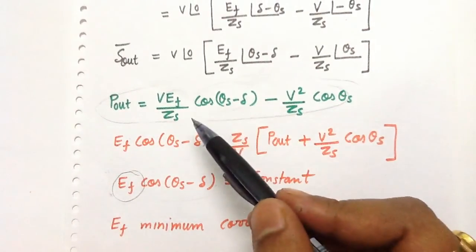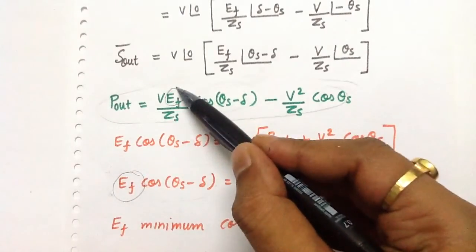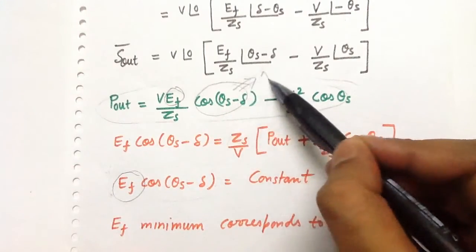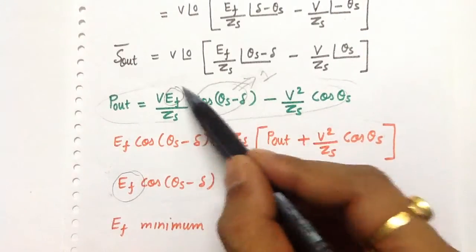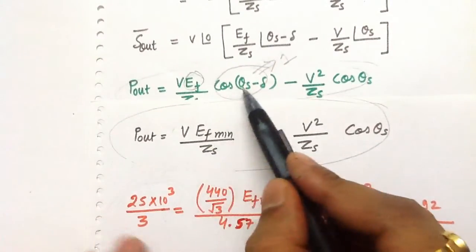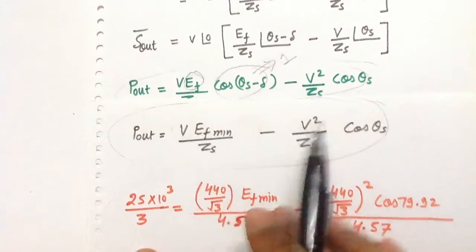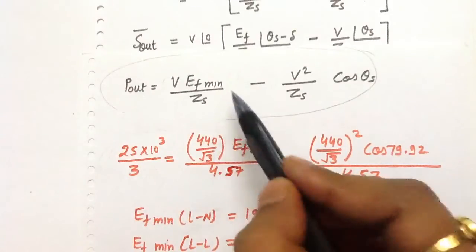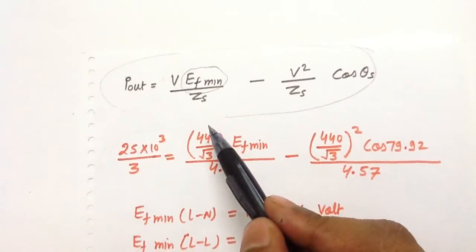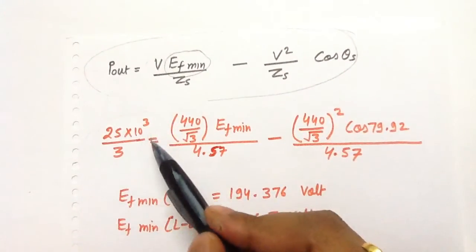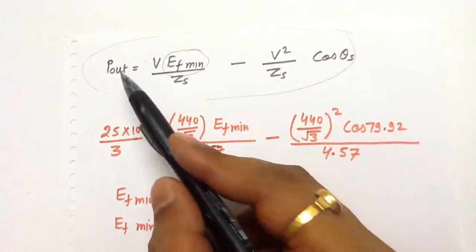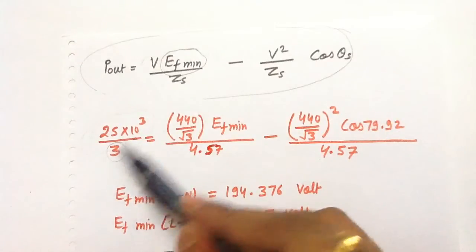Now I am going to calculate the minimum value of the excitation. This excitation is minimum when cos(θs − δ) = 1, so in the formula I substitute 1 in place of cos(θs − δ). The generator has to deliver 25 kilowatt power to the bus — this is three-phase power. I am writing the power output on a single-phase basis, so I divide by three.